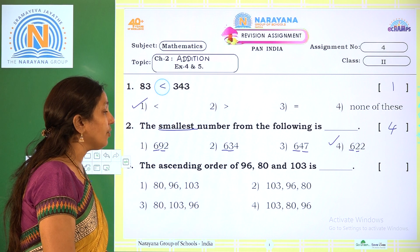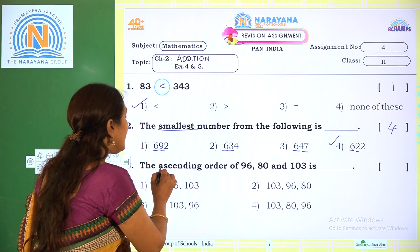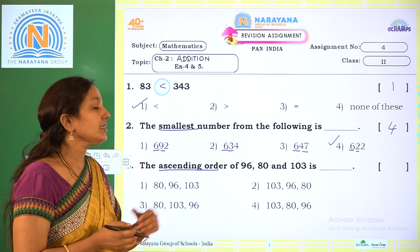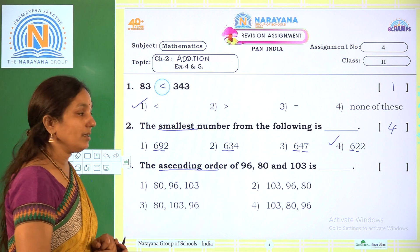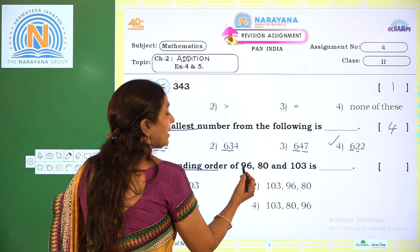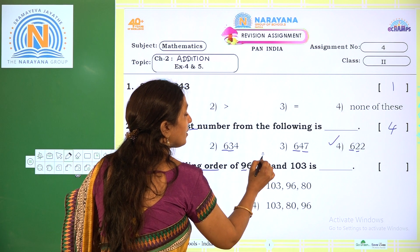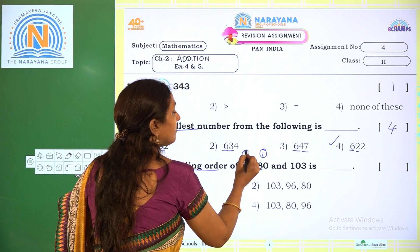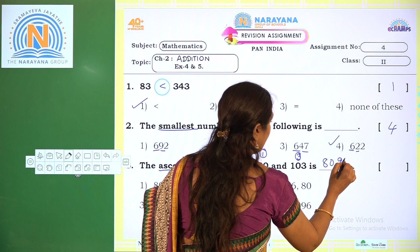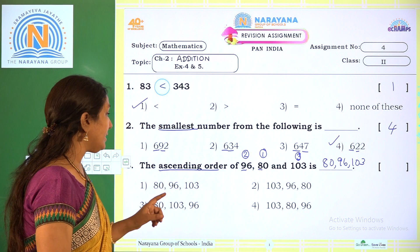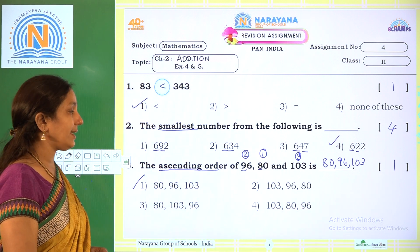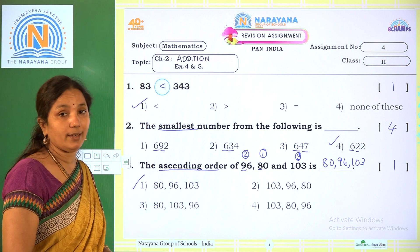Next: the ascending order of 96, 80, and 103. Ascending order means numbers arranged from smallest to greatest. Here 96 and 80 are 2-digit numbers, and 103 is a 3-digit number, making 103 the greatest. Comparing 96 and 80, the tens digits are 9 and 8, so 80 is the smallest. The ascending order is 80, 96, 103. The correct option is Option 1.